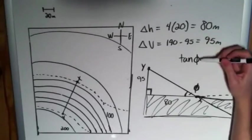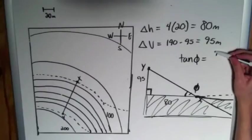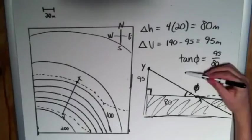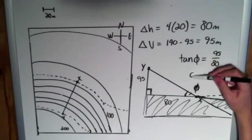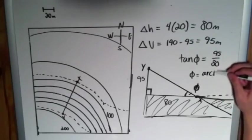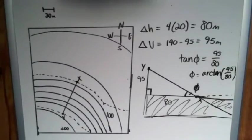So if we want to find angle phi, then we just say that tangent of phi is equal to 95 divided by 80. And then we just do the inverse tangent or the arc tangent of each side. Phi is equal to the arc tangent of 95 divided by 80.